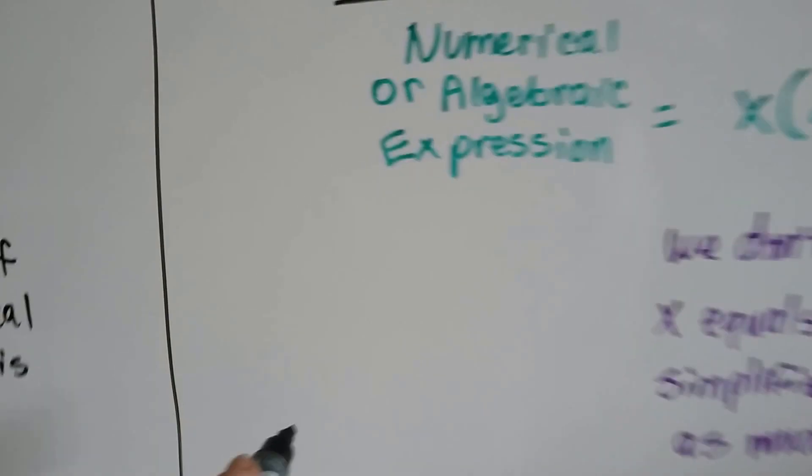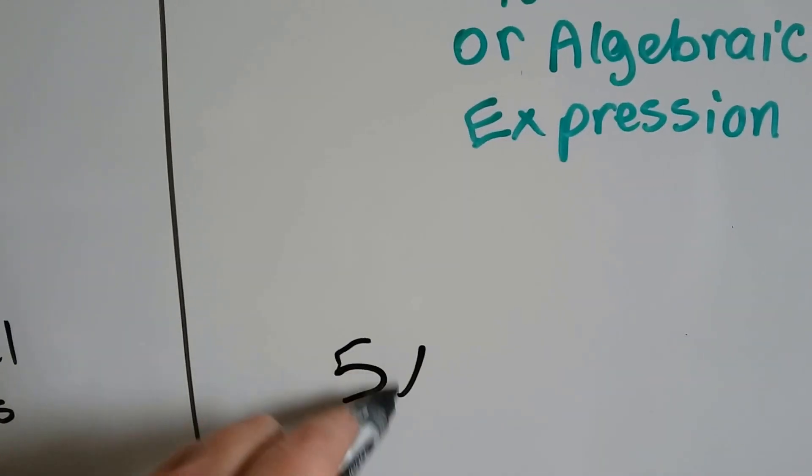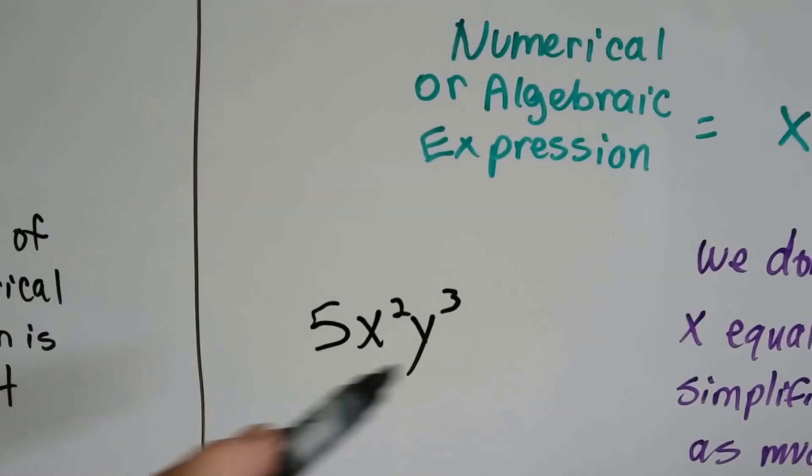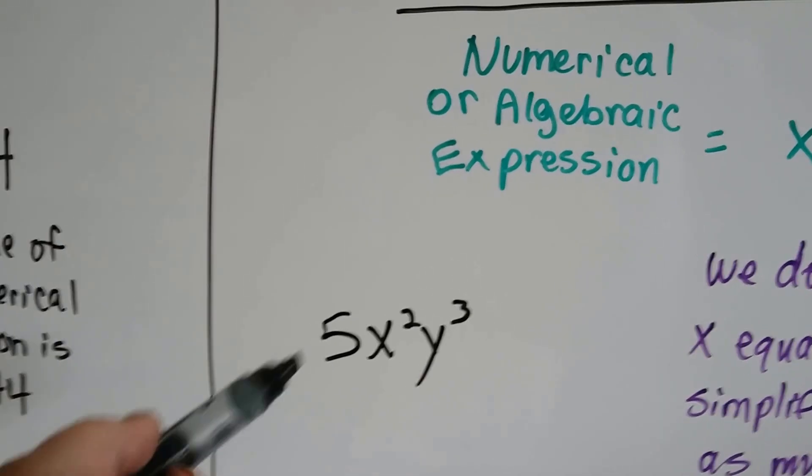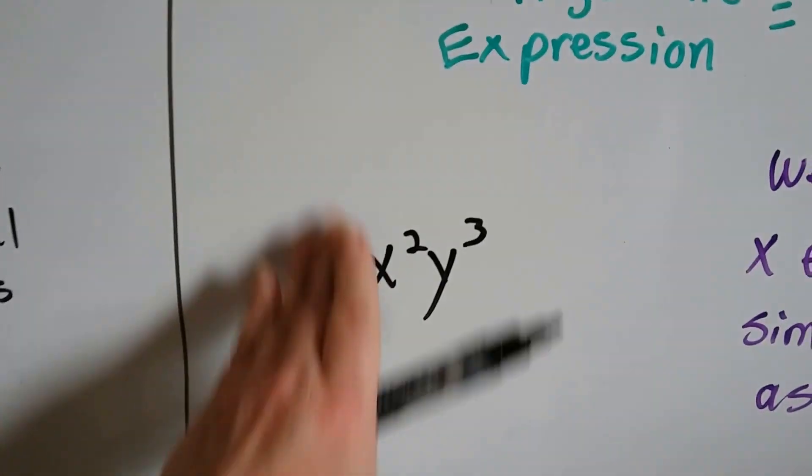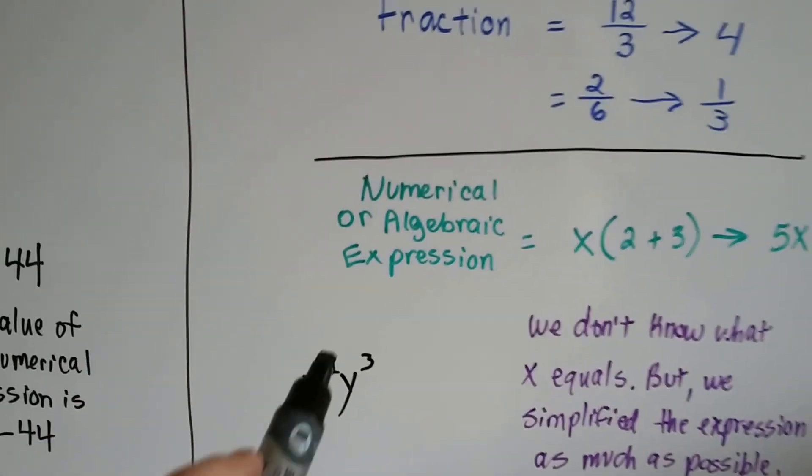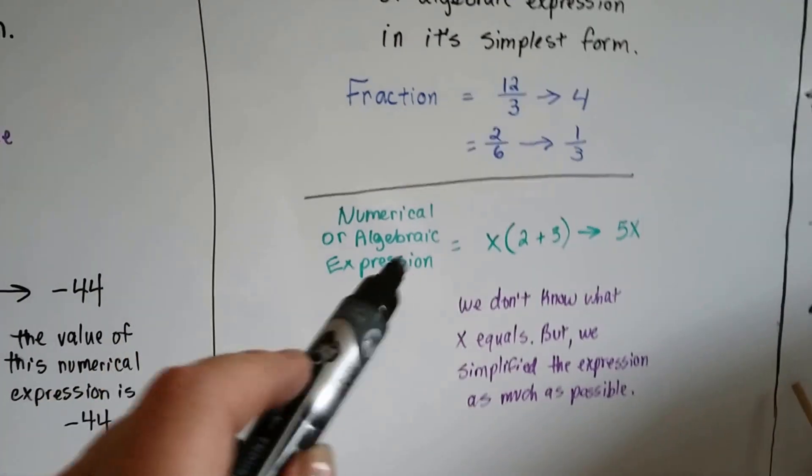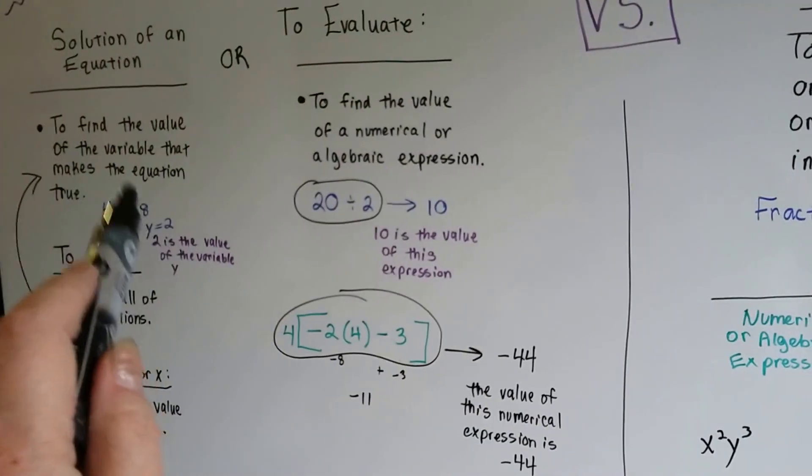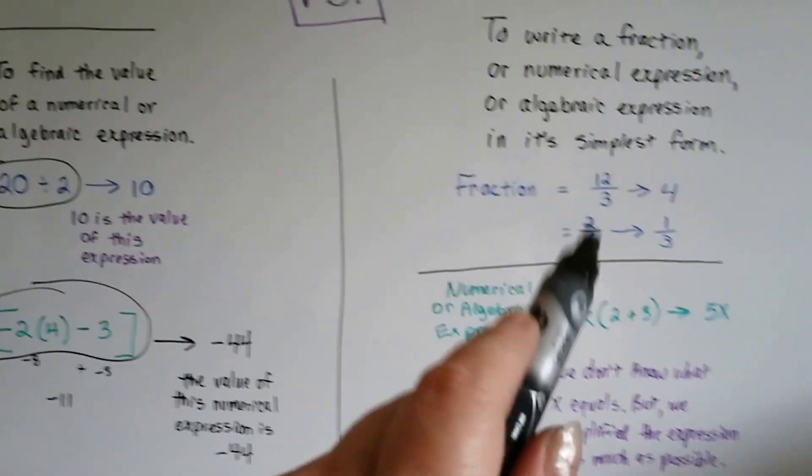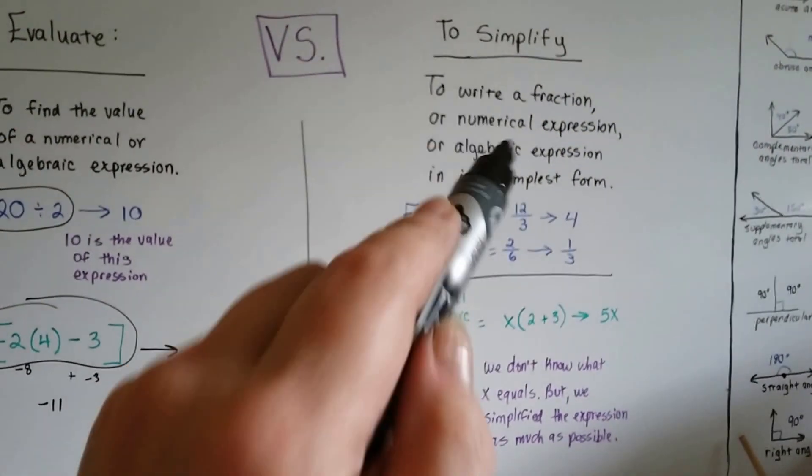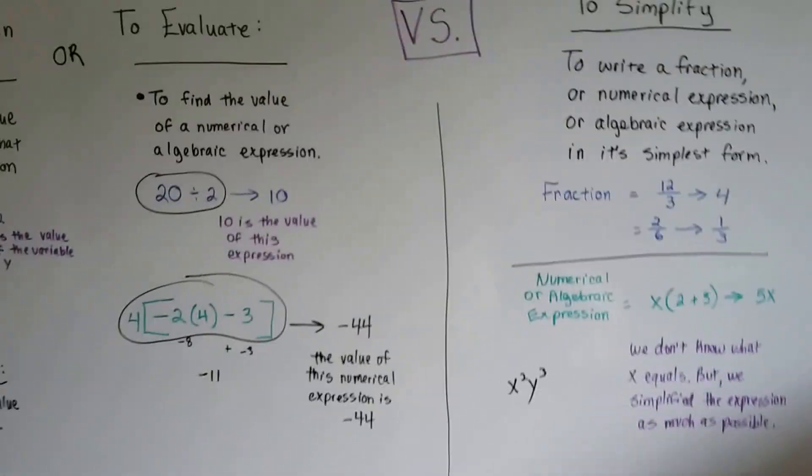Sometimes the answer in an algebra problem can just be some variables and some exponents. That could be an answer. Sometimes the answer is just variables. See? So when we work with algebra, it's really important to understand that when we simplify, we're not really looking for an answer like over here. So don't beat yourself up saying I can't figure out the answer. I got 5x, but what is x equal? Well, in algebra, you found the answer. It was 5x. Okay?